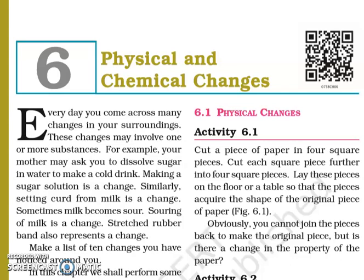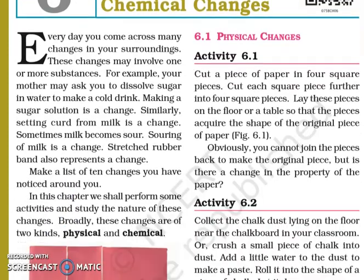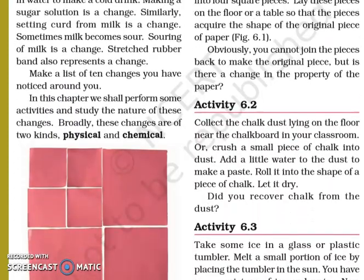Whether the changes we encounter in our day-to-day life can be reversed back or cannot — on the basis of that, we divide changes into physical and chemical changes. There are more properties of physical and chemical changes that we will learn in this chapter. Broadly, these changes are of two kinds: physical and chemical.